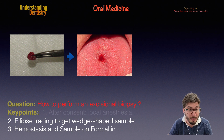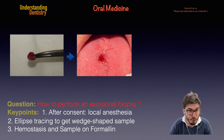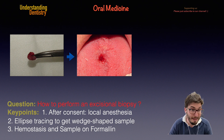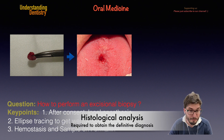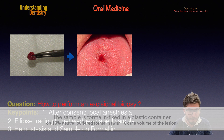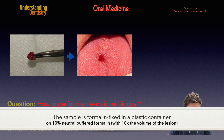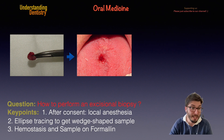Now you can see that we are using soft tissue forceps to remove the lesion. We need to be careful not to damage the lesion because we are going to send it for histological analysis. For this purpose, we place the lesion in a plastic container with 10% neutral buffered formalin.